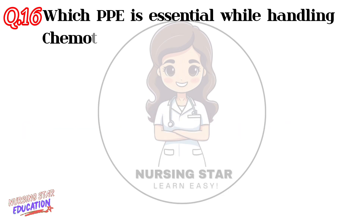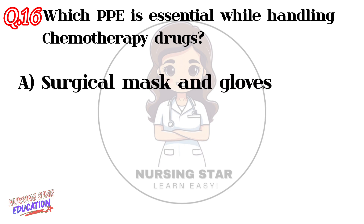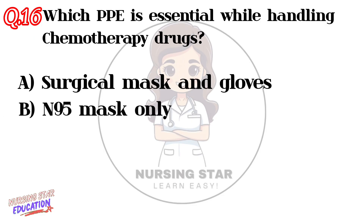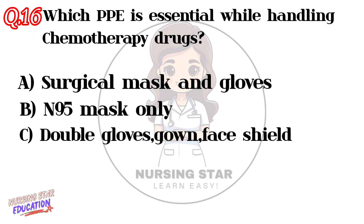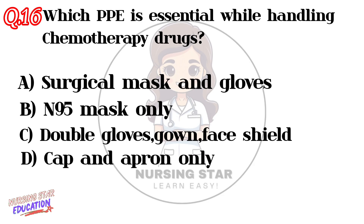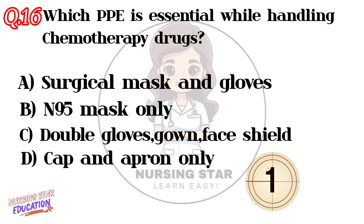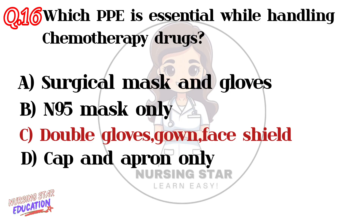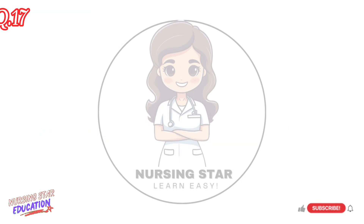Question number sixteen: Which PPE is essential while handling chemotherapy drugs? Option A: Surgical mask and gloves. Option B: N95 mask only. Option C: Double gloves, gown, face shield. Option D: Cap and apron only. Correct answer: C — Double gloves, gown, face shield.